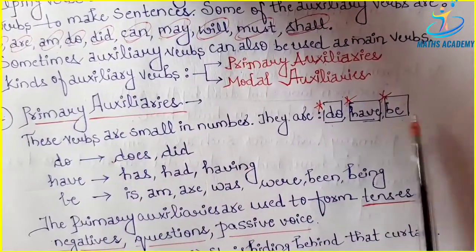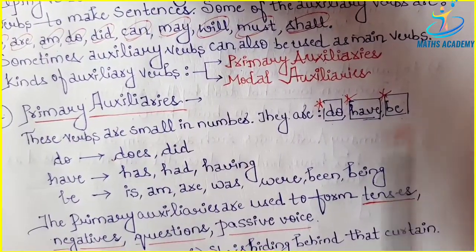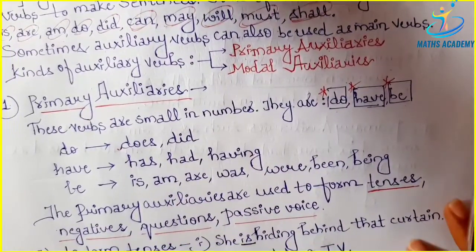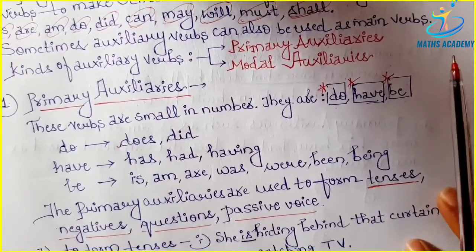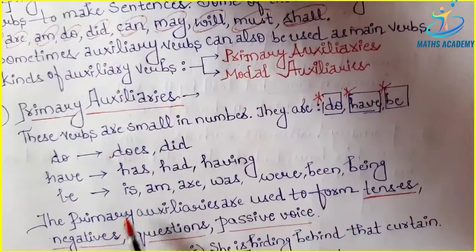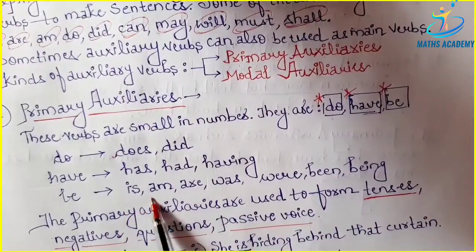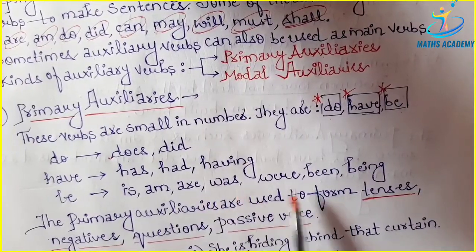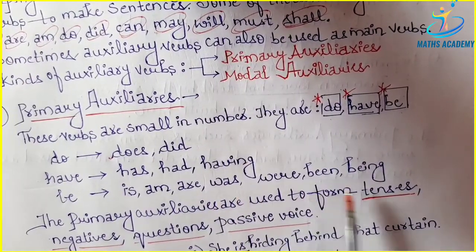Primary auxiliaries mainly have three types of verbs: do, have, and be. And be can be used in different ways: is, am, are, was, were, been, being.